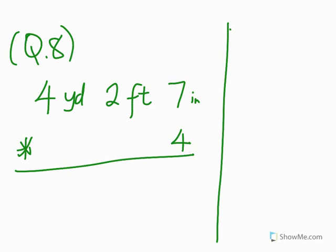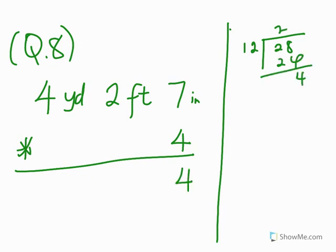Question 8: 4 yards 2 feet 7 inches times 4. We start with 7 inches times 4, which gives us 28 inches. How many feet can we get from 28 inches? That would be 28 divided by 12, which gives us 2 feet and 4 inches. The 4 inches is the remainder — that's the inches portion. We got 2 feet.